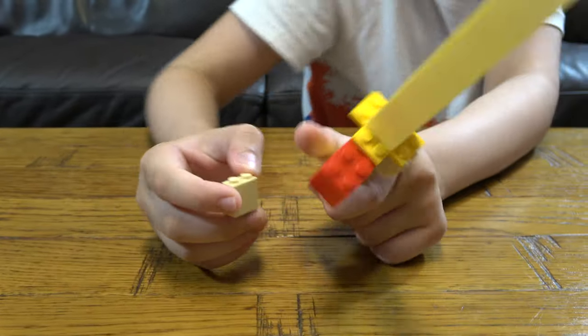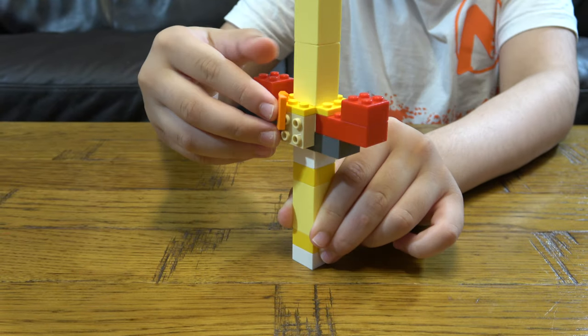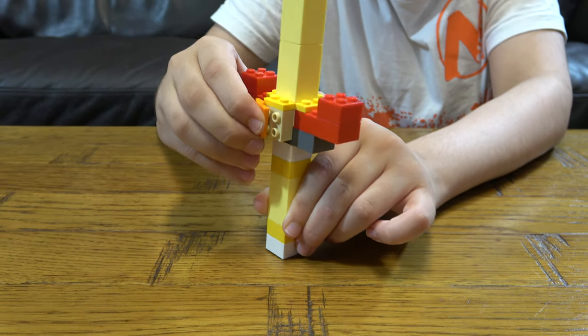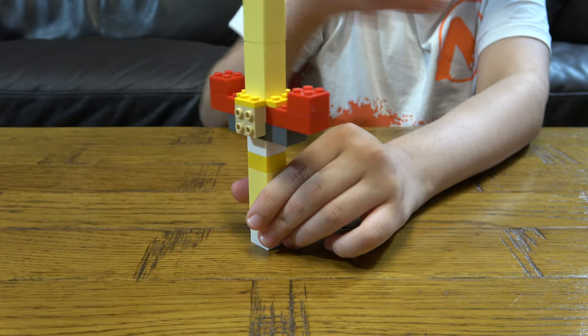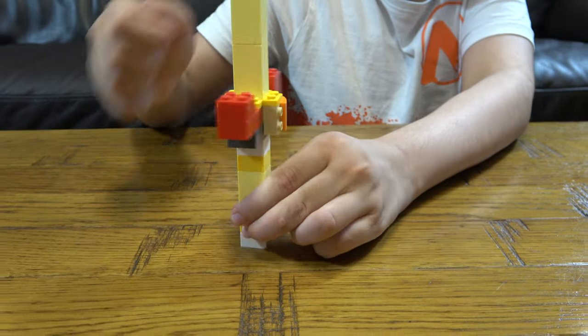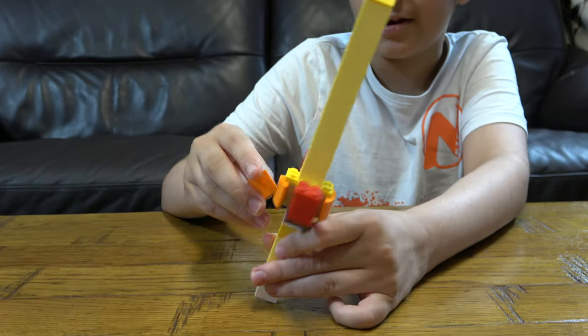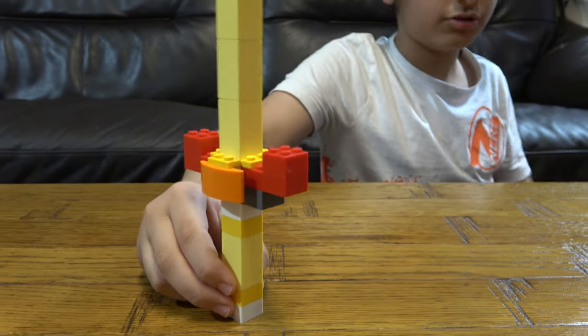I was confused for a second. And then we get four of these. We put these onto here. Yeah. Like that. So here's your finished super sword.